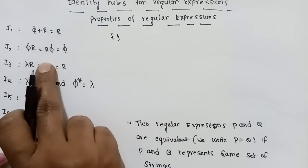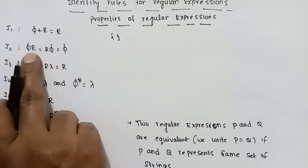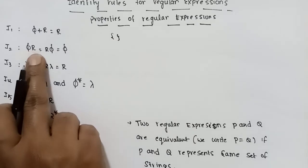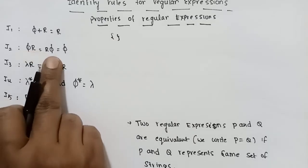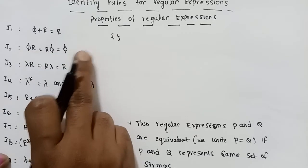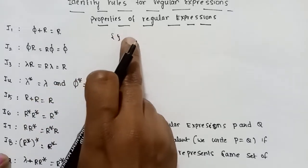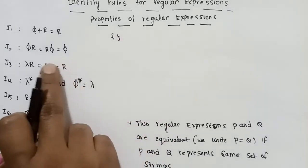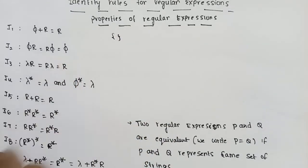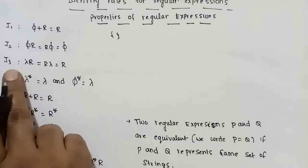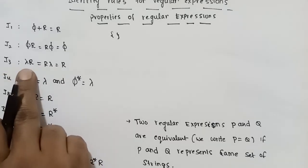Similarly, if φ is concatenated with R, the resultant is φ (the null set). This is the second property: φ · R = φ.